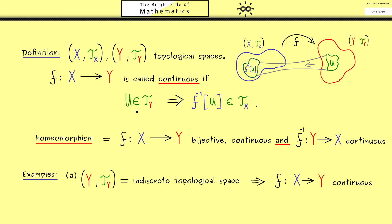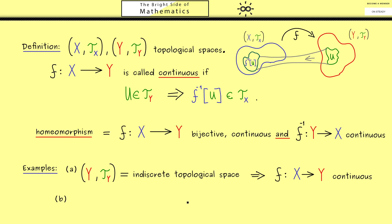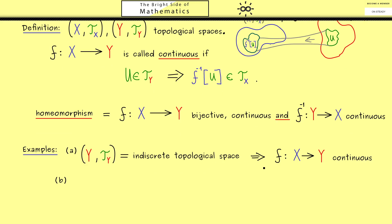Because the only possible pre-images are the empty set and the full space. Therefore this here is always fulfilled. Hence every map f from X to Y is continuous then. So you see this is a nice example because it immediately gives us a lot of continuous maps.